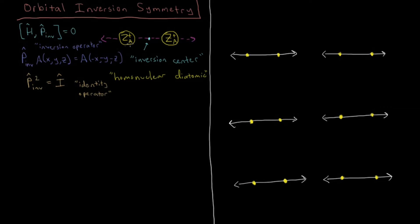Our entire molecule has a symmetry element called an inversion center. Halfway between each of the nuclei, there's a point where our Hamiltonian is symmetric with respect to inversion about this center.